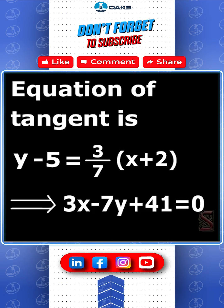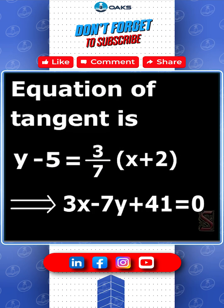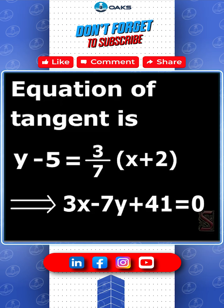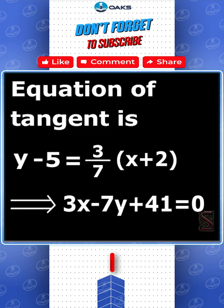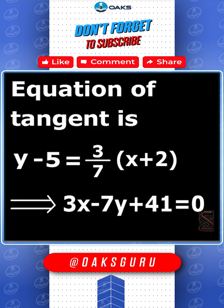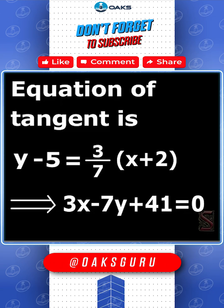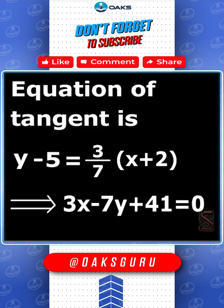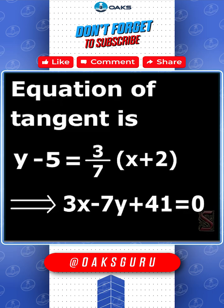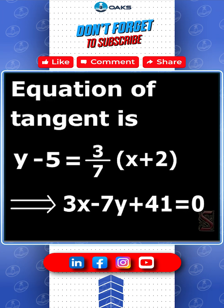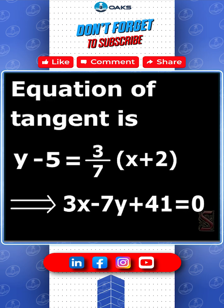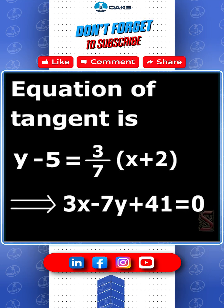Hence, the equation of the tangent is y minus 5 equals (3/7) times (x plus 2), which reduces to 3x minus 7y plus 41 equals 0.